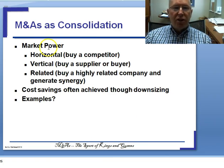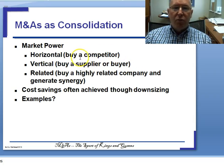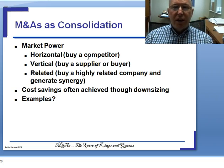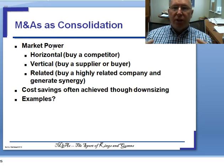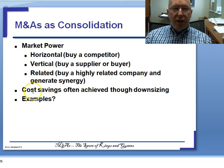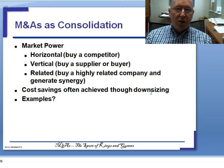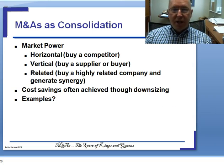For the exam it's very important you know horizontal versus vertical. A vertical acquisition is buying someone who was previously a supplier or a buyer; a horizontal is someone that's basically a competitor in the same market, even if geographically separated. The logic of a consolidation is to build market power: through getting bigger, you get better deals from suppliers, you can charge buyers more, and you achieve cost savings by downsizing — two HR departments, two legal departments, two marketing departments consolidated into one.